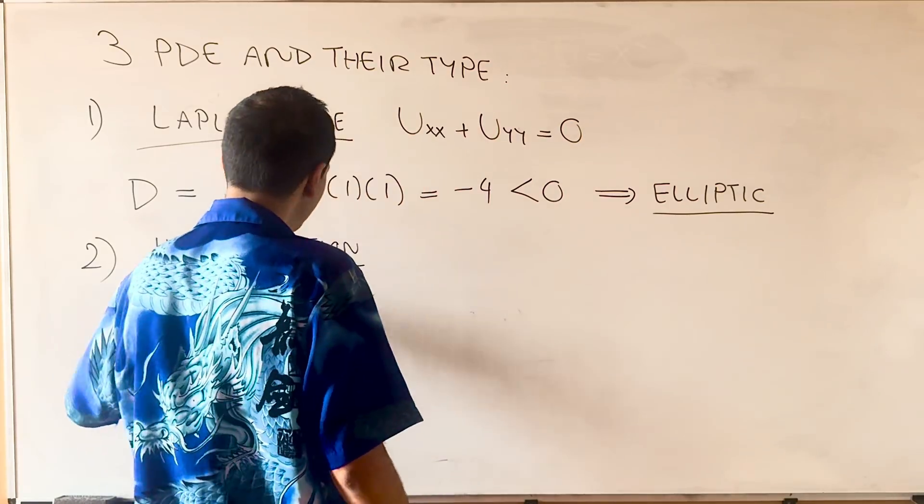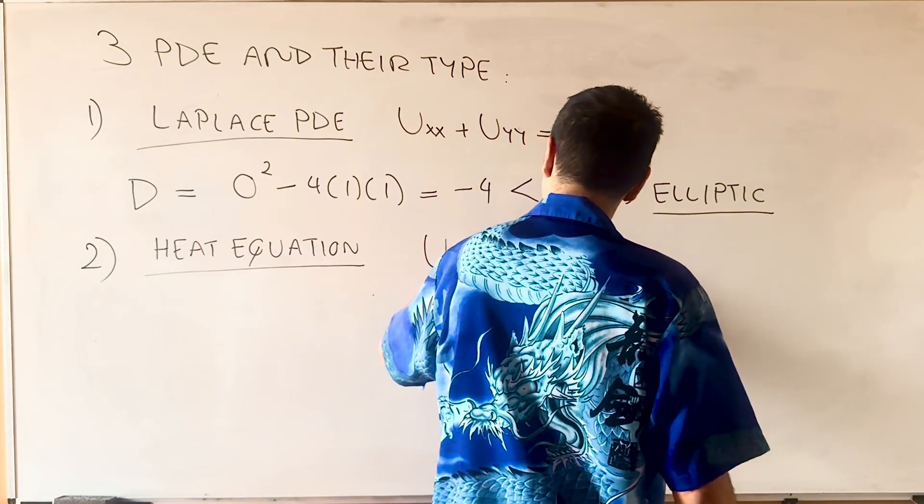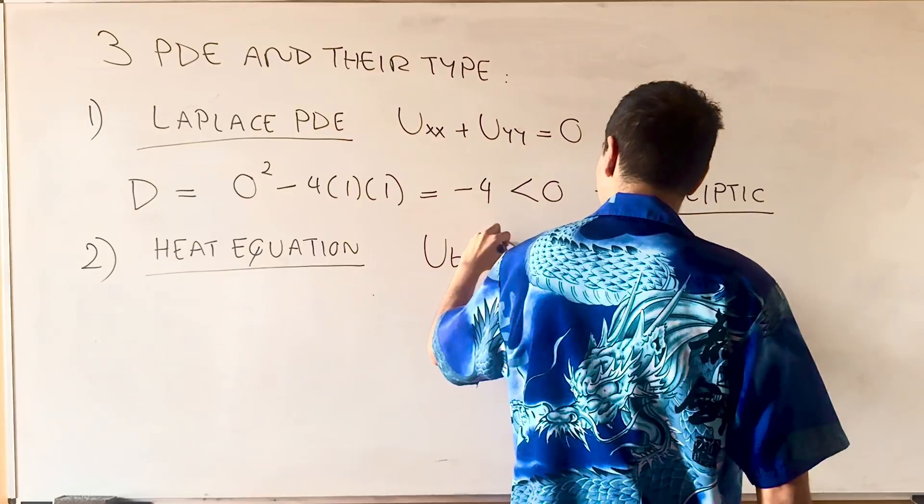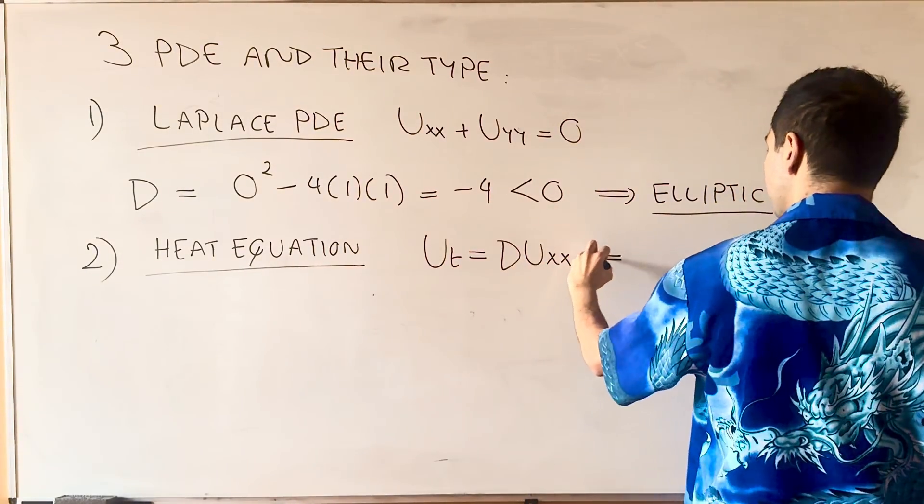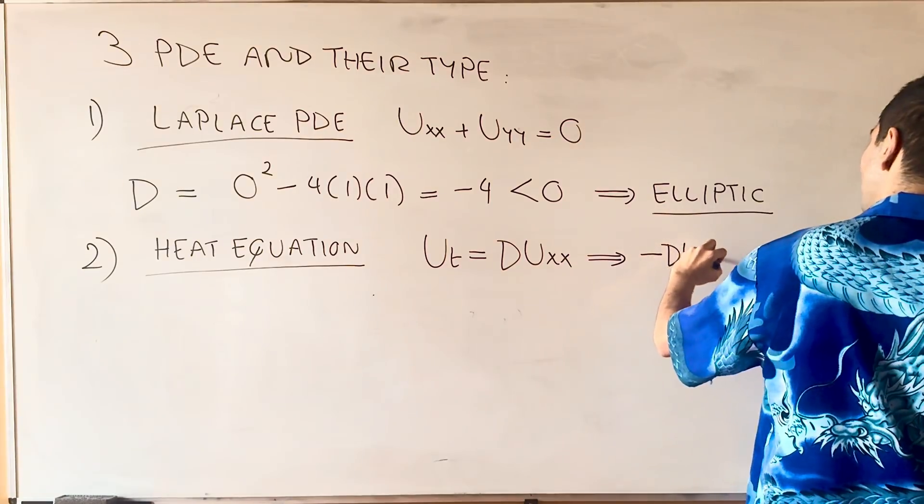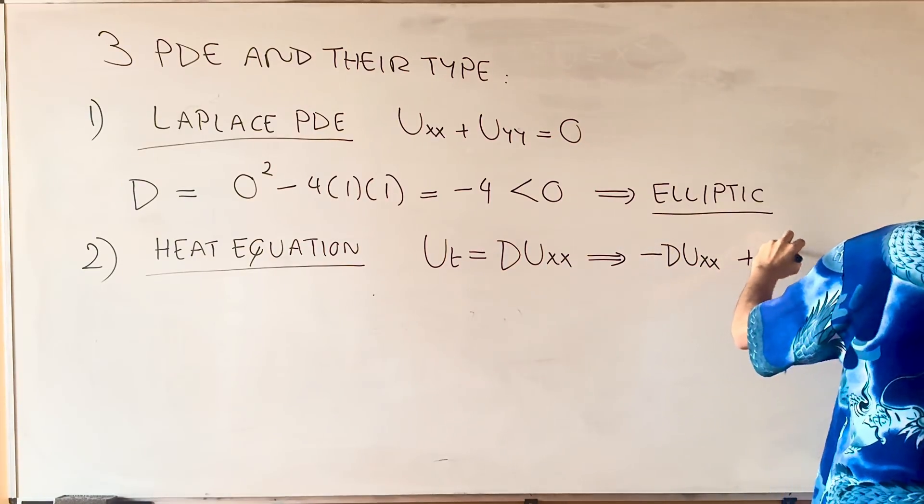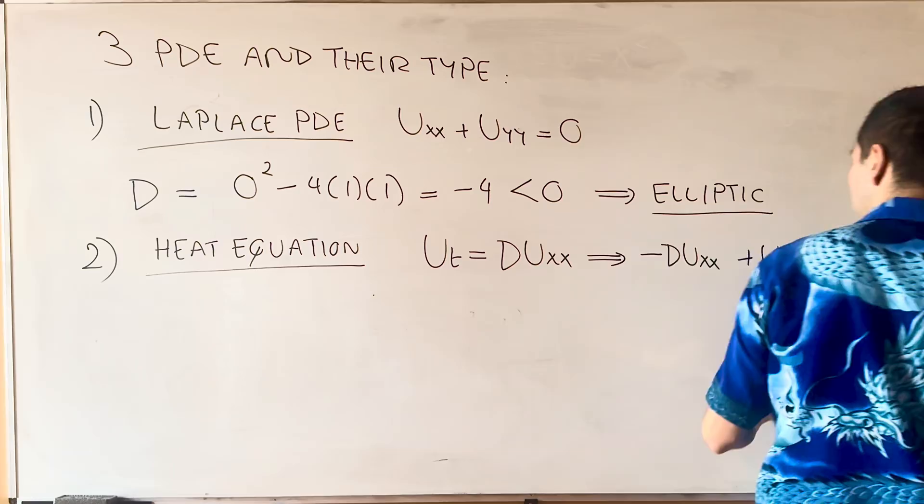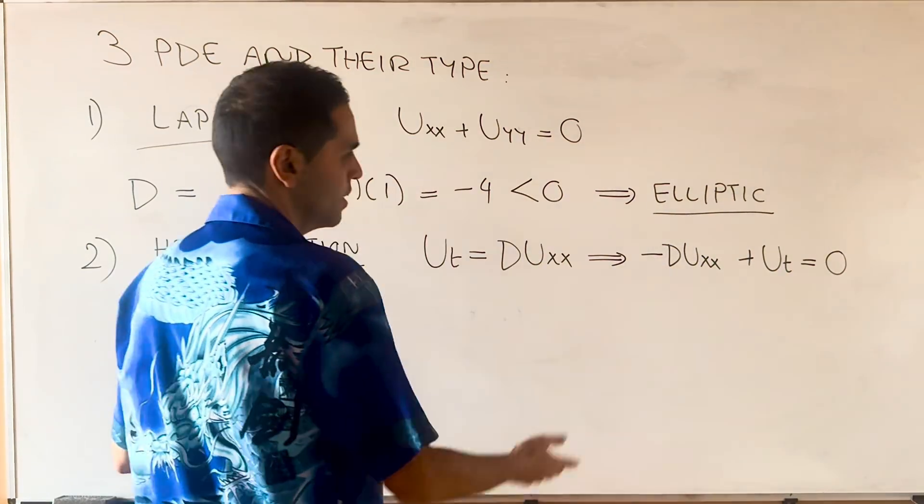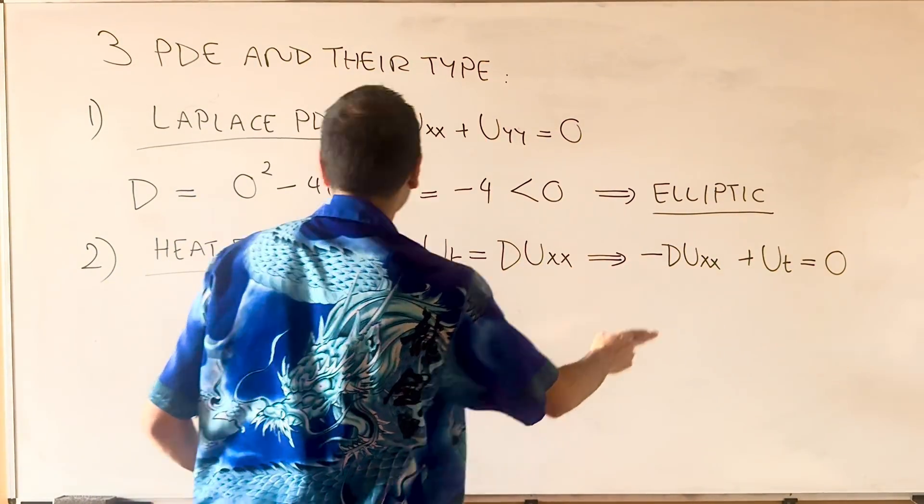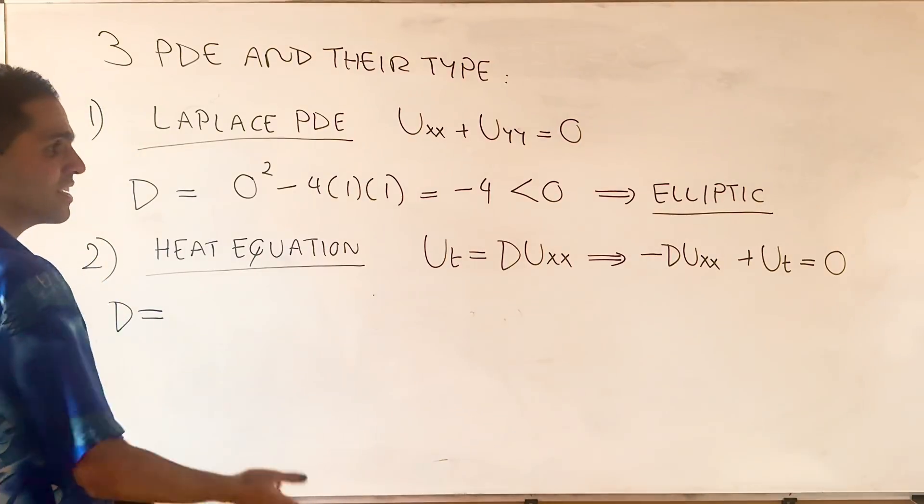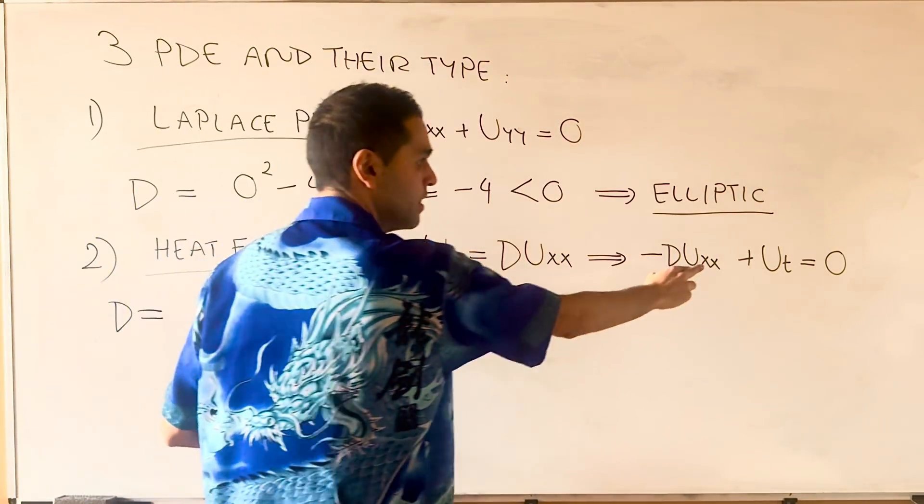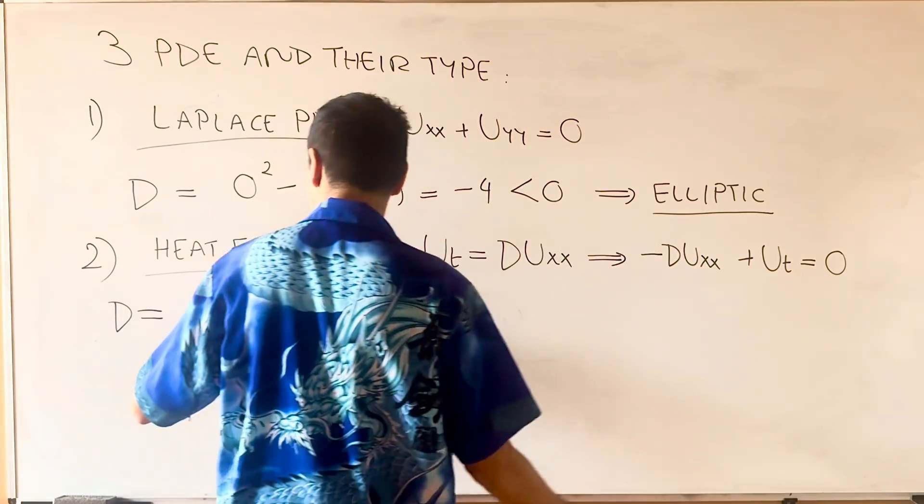U_T equals DU_XX, where D is positive. Notice you can write this as minus DU_XX plus U_T equals 0. I apologize for using the same D, but that's the terminology. In this case, there is no XY or XT term,